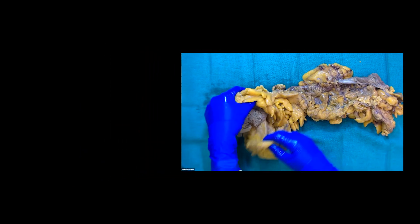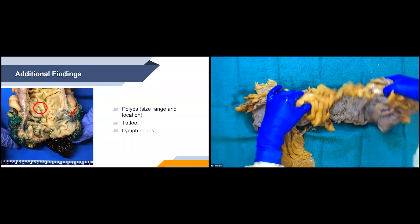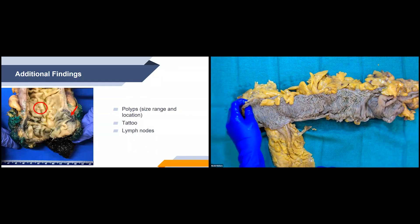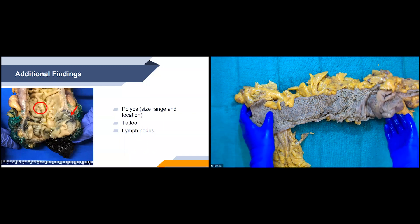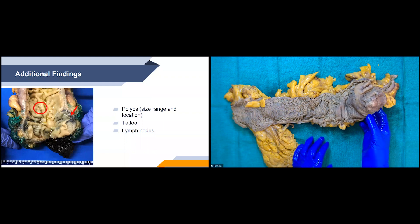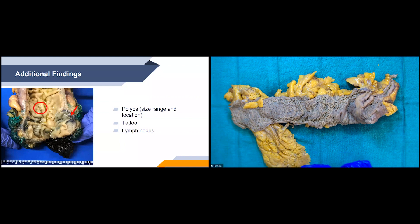Now we're going to go into our additional findings. We've talked about the specimen and the main finding, which is this mass. We'll also want to talk about the background mucosa — identifying if there are any other polyps. If there are polyps, we'll give their size range and location. The polyps are circled on the PowerPoint slide, and we'll measure those to both end resection margins and to the mass. We'll also want to comment on if there is a tattoo — placed by the surgeon at or just below the site of the tumor so they know they got the tumor out. We'll also comment on all of the lymph nodes found, noting how many there are and their size range.